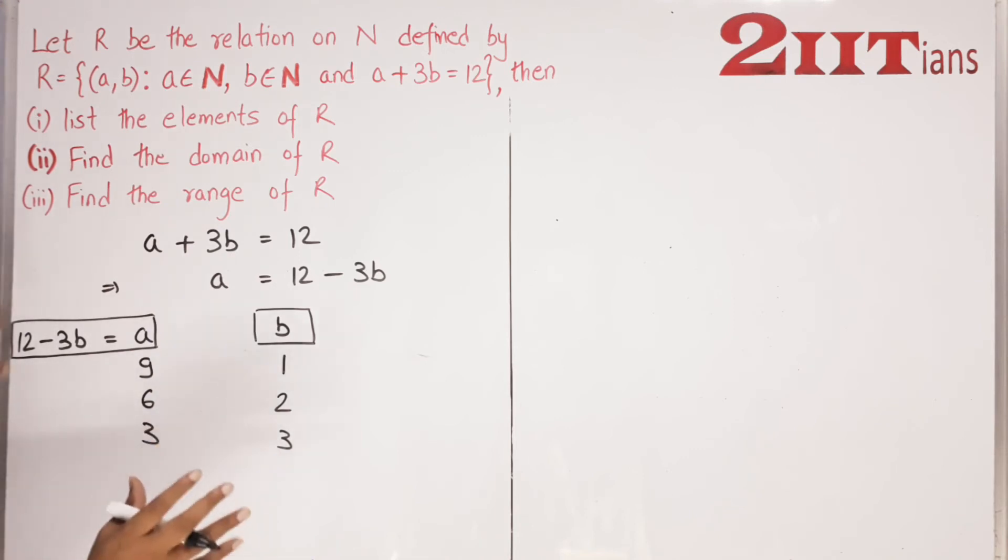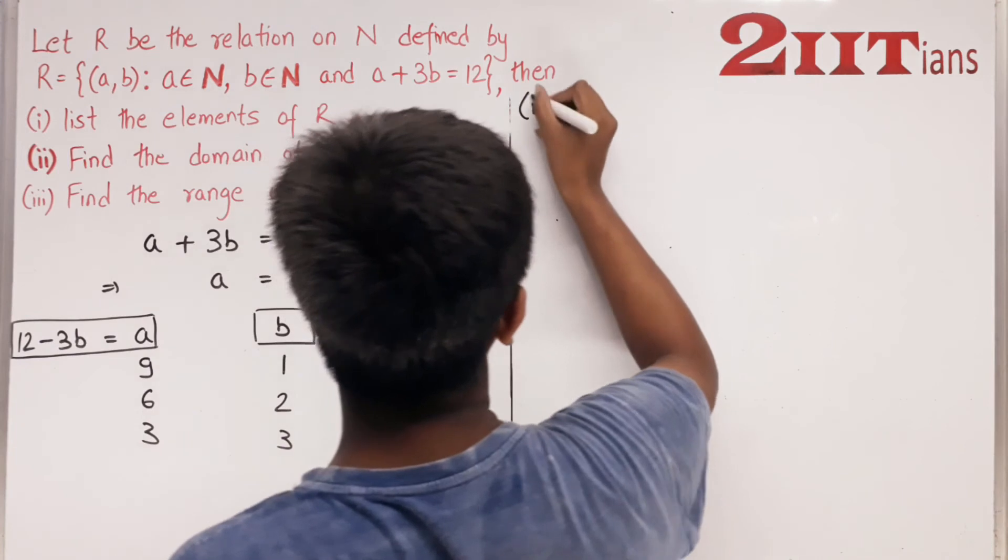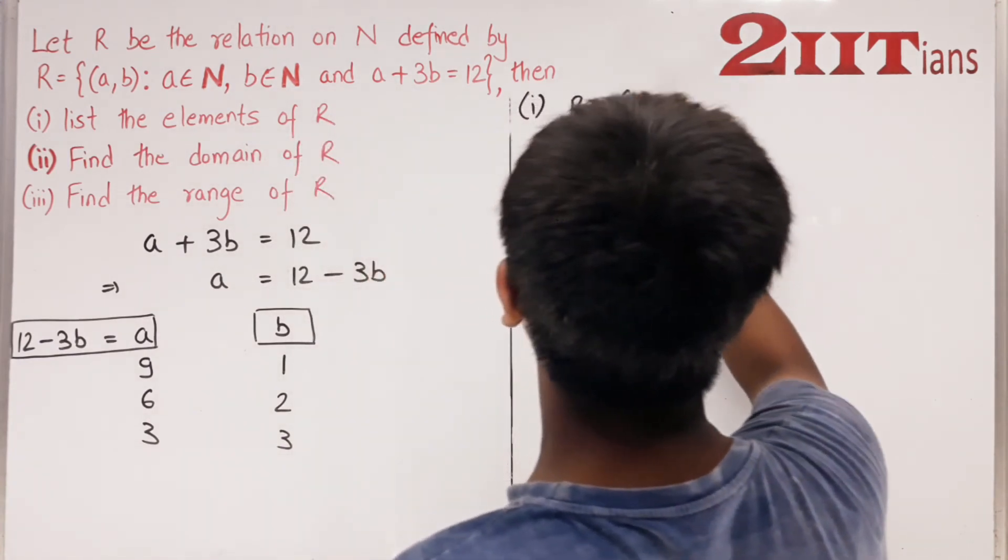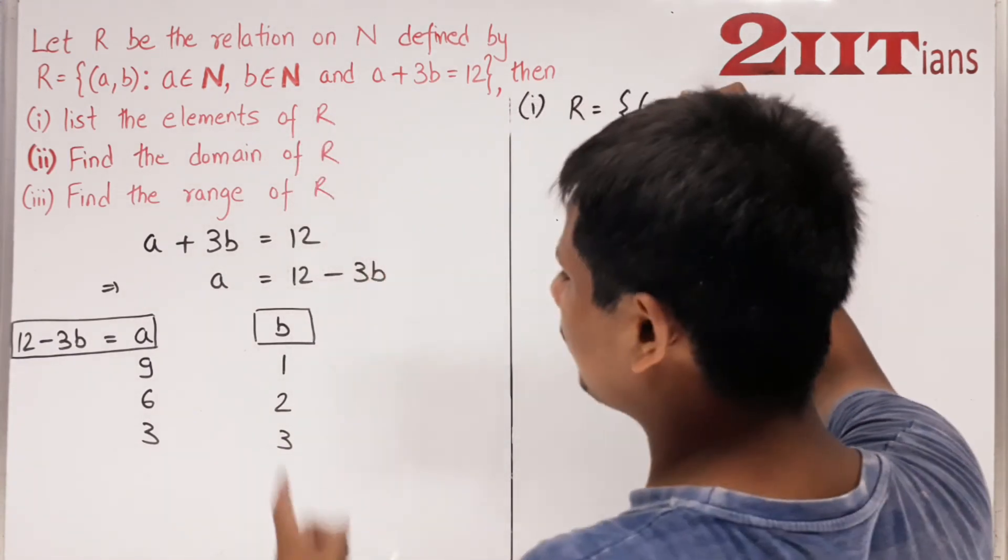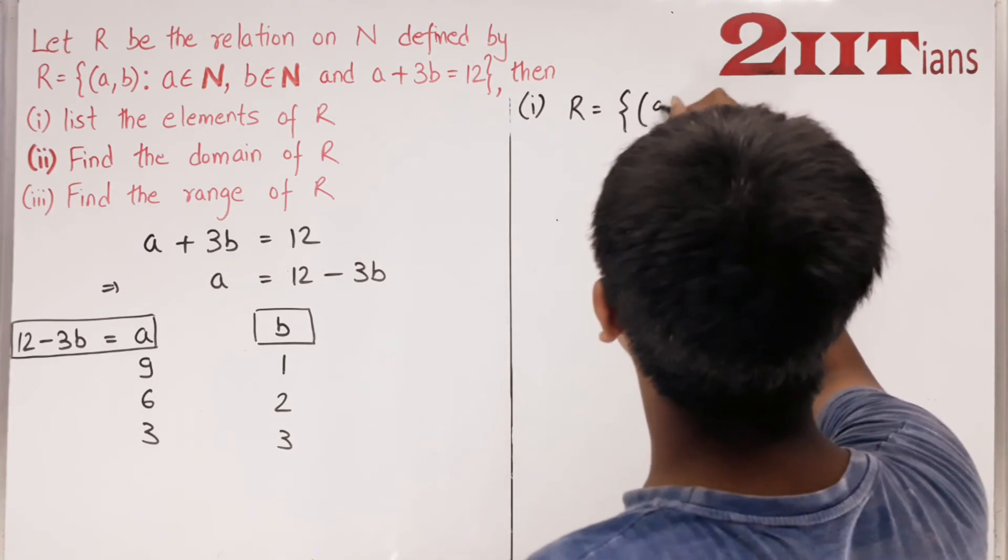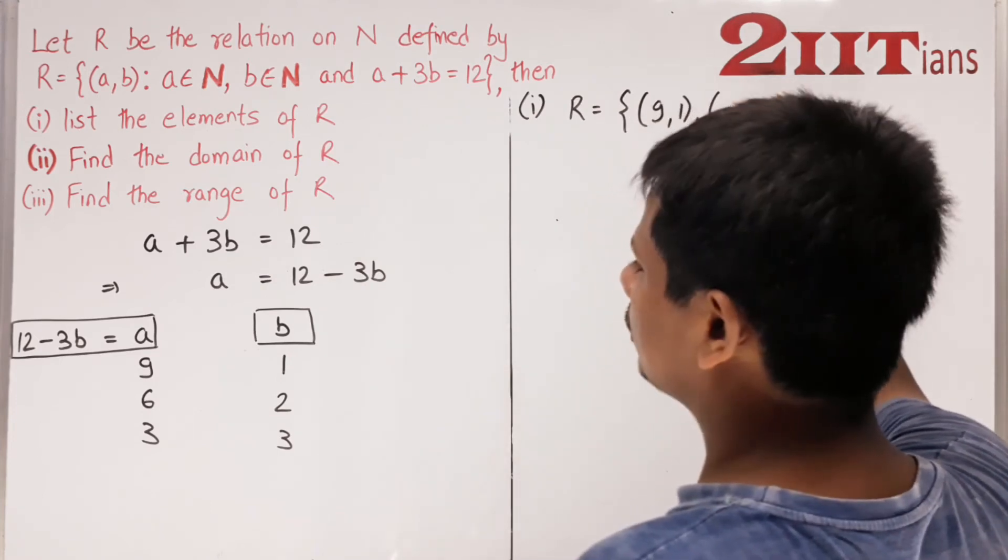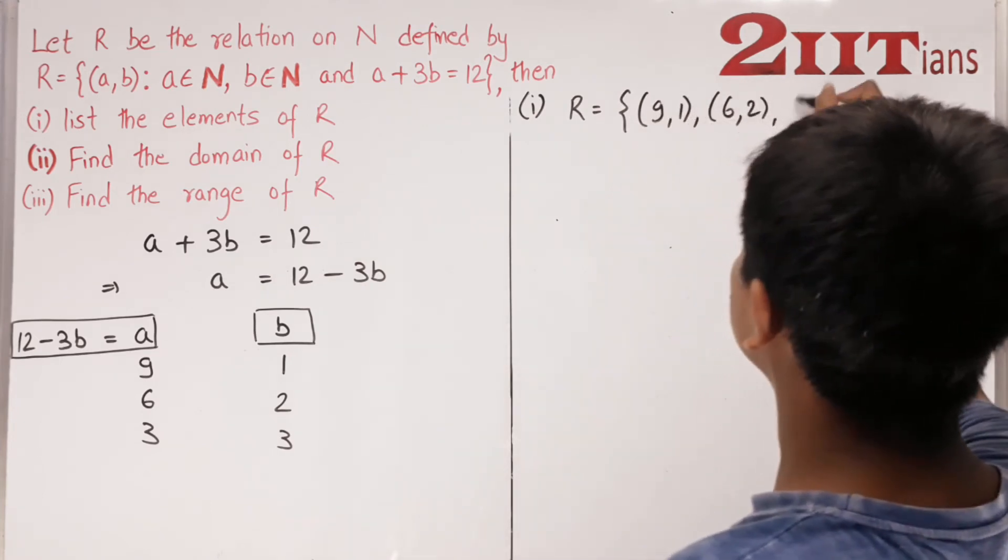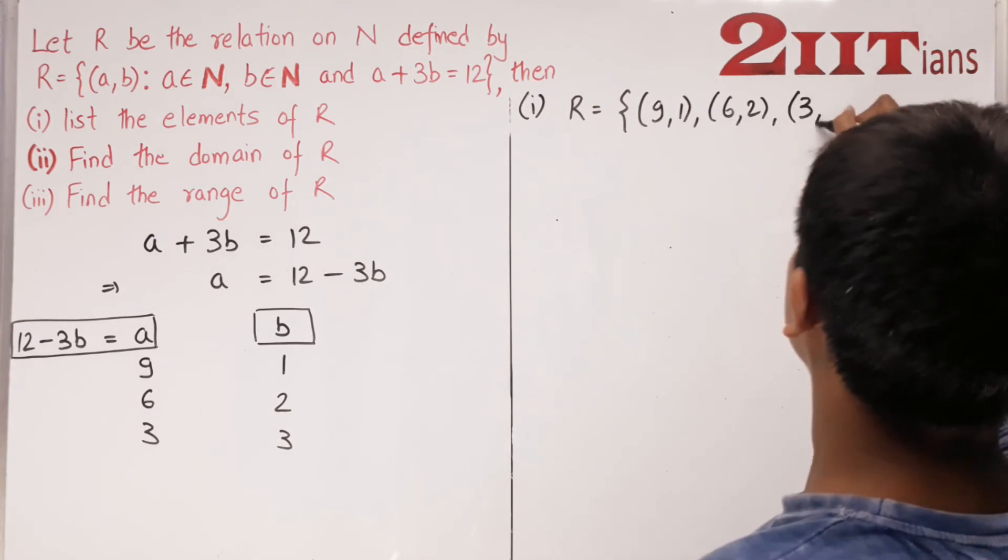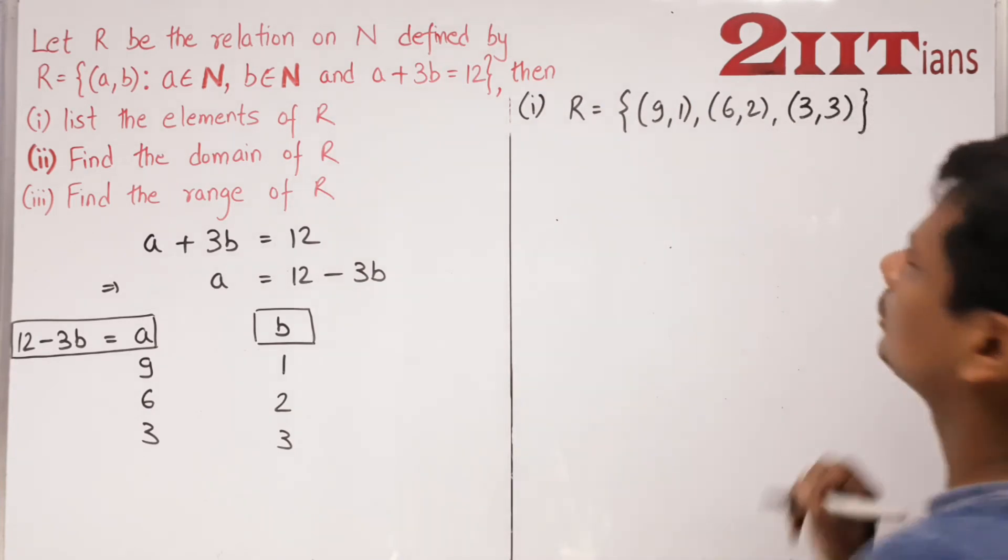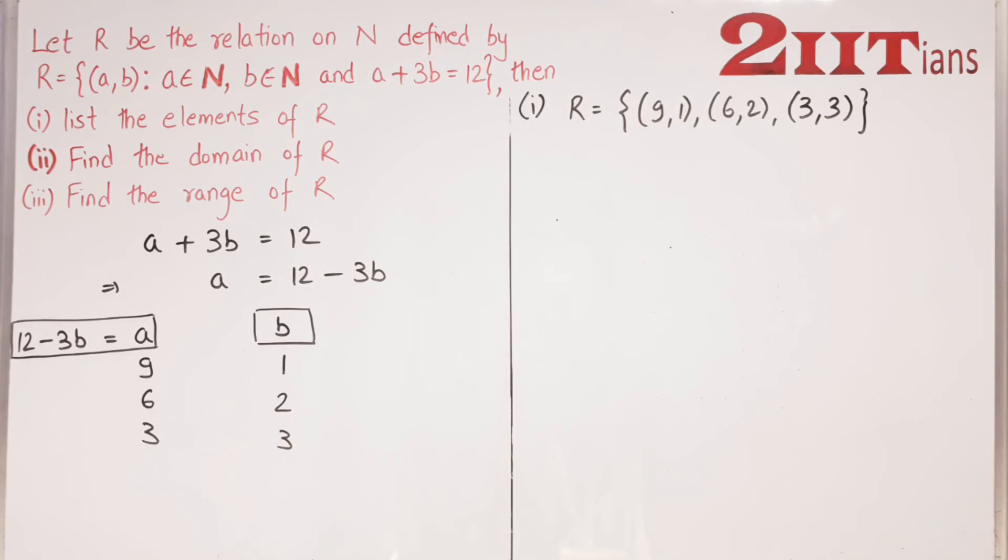Our set progression stops here. Now to list the elements of R, the first part is done directly here. 9 is pairing with 1, 6 is pairing with 2, 3 is pairing with 3. This is your first part answer in roster form.